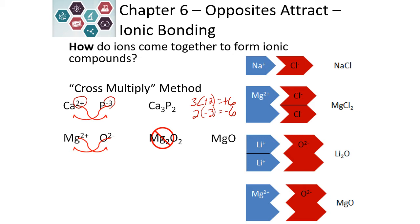Now, if we look at our example of magnesium and oxygen, then we would get Mg₂O₂. Ionic compounds are always in the lowest reduced form, so this method still works. We just need to take another step and divide each of those subscripts by two in order to get our correct formula of MgO.